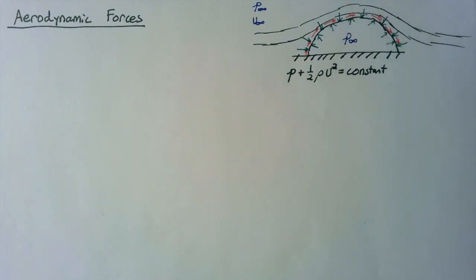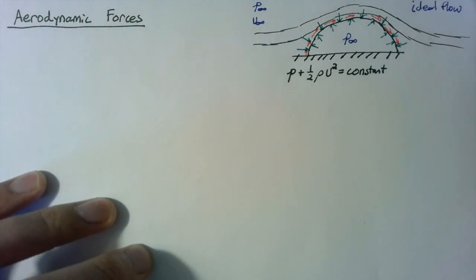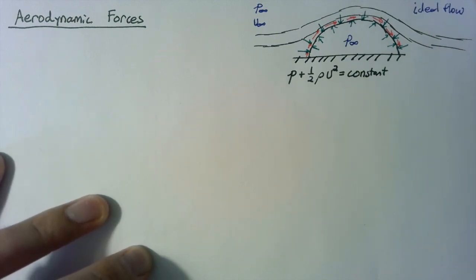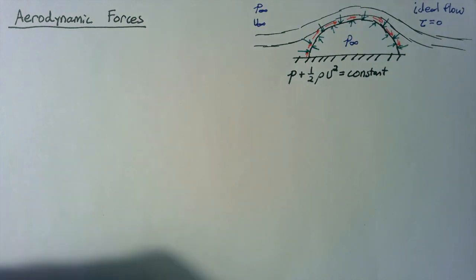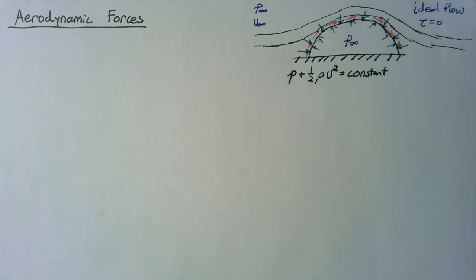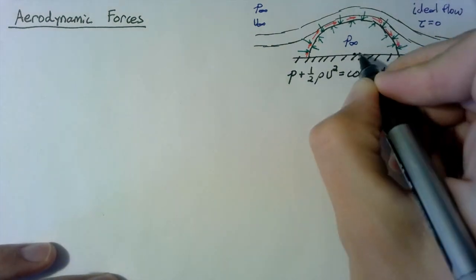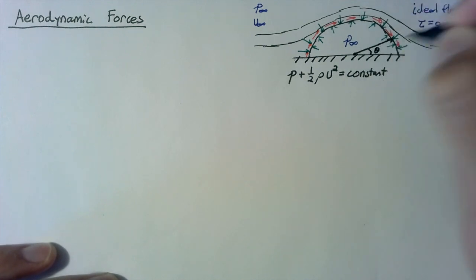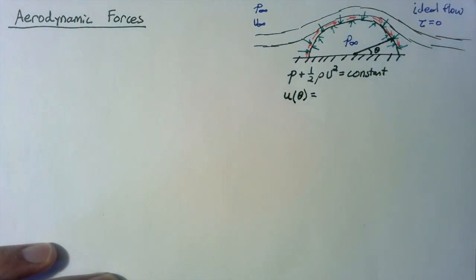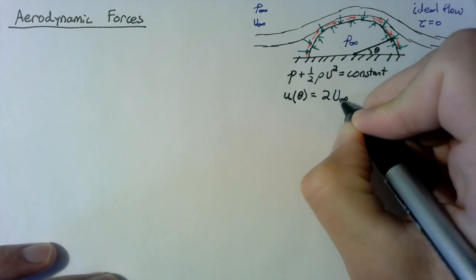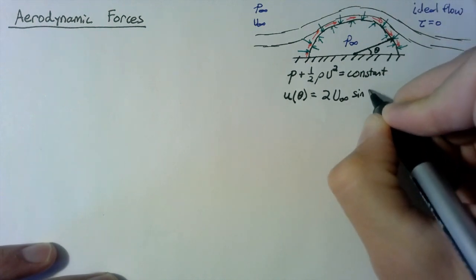We're going to make an assumption of ideal flow. This has a couple of ramifications. The first is that tau, our shear stress, is going to be zero since there's no friction in ideal flow. The next is that we know exactly what our velocity distribution is over our cylinder. If we define the surface based on an angle theta, the velocity at a given theta is equal to 2 times the far-field velocity times sine of theta.